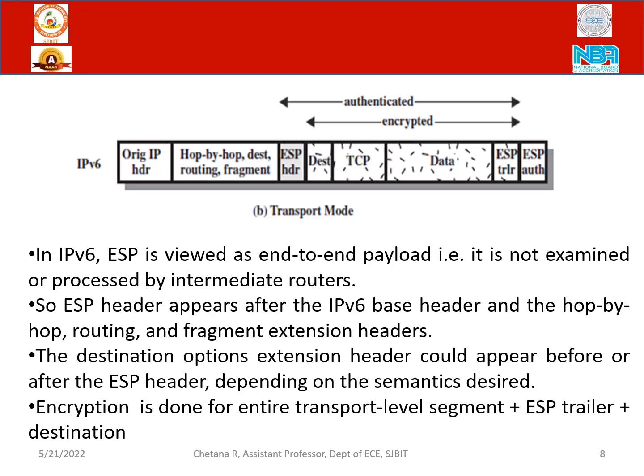In transport mode, specifically with IP version 6: In IPv4, there is an extra TCP field that is taken care of. In IPv4, ESP is viewed as an end-to-end payload — it is not examined or processed by intermediate routers. Just check the header and go; the whole body undergoes scrutiny.